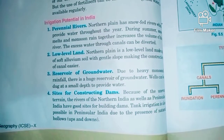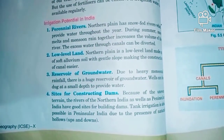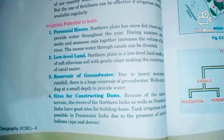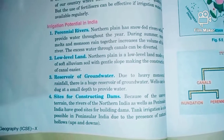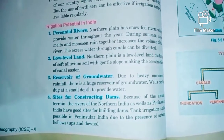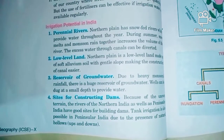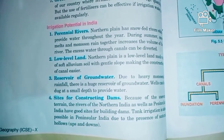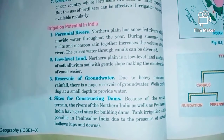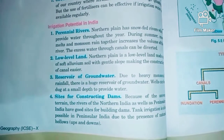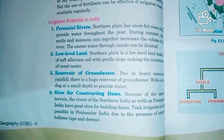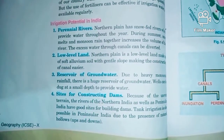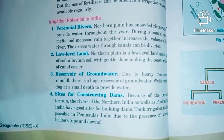Tank irrigation is also possible in peninsular India, where natural hollows are available and hard impervious rocks help store water for a longer period. Because of the availability of hollows and uneven terrain, we can build dams and tanks to store water for irrigation. India has good potential for irrigation facilities, and now let's study what types of irrigation are followed in India and why different methods are used from place to place.